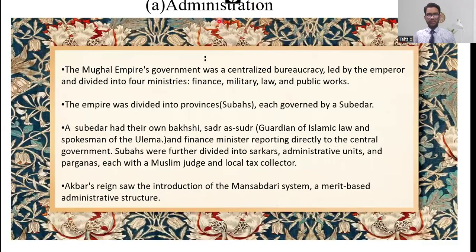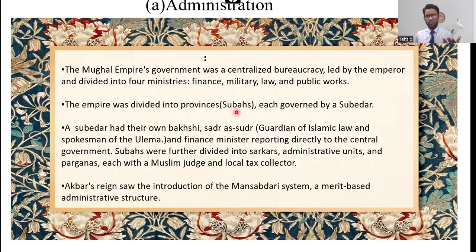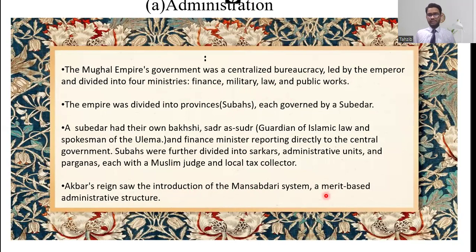Mughal administration was a centralized bureaucracy led by the emperor, who controlled finance, military, law, and public works. The empire was divided into Subhas, then Parganas. Under Akbar, the Mansabdari system was introduced — a merit-based administrative system that is still historically significant today.